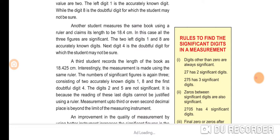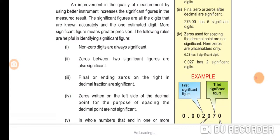Using a ruler, measurement up to the third or even second decimal place is beyond the limit of the measuring instrument. An improvement in the quality of measurement by using better instruments increases the certainty of the significant figures.